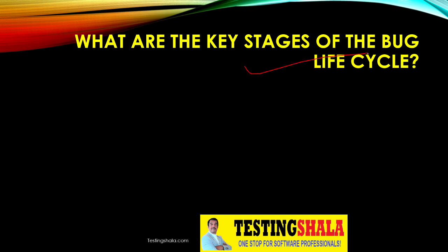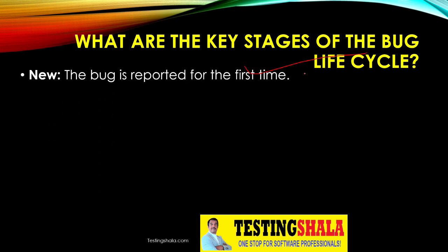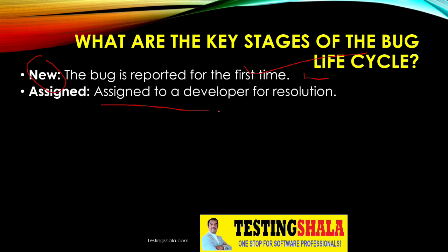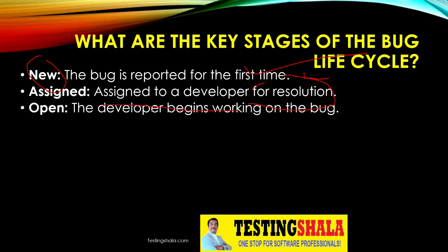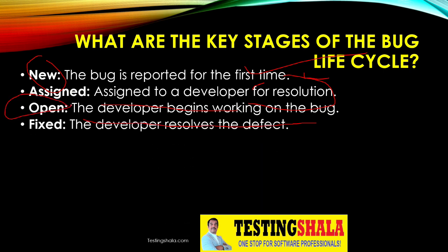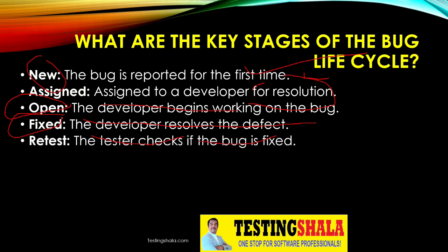The next question is: what are the key stages of the bug life cycle? The first stage is when a bug is reported for the first time, which is the new state. Once in new state, it gets assigned to a developer for resolution. Once assigned, the developer begins to work on the bug, which moves it to the open status. When the developer fixes the issue, it moves to the fixed status.